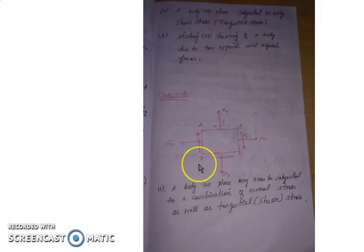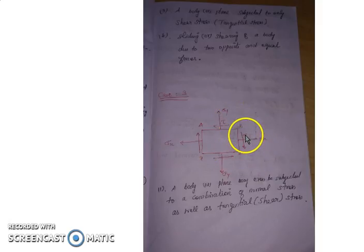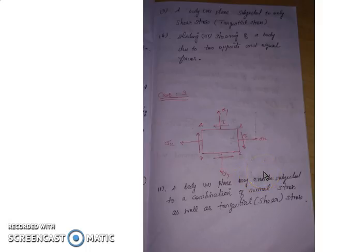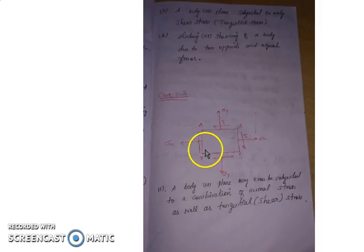Consider case three: the same plane element ABCD subjected to a combination of both x direction, y direction, and tangential forces — that is, both normal stresses and tangential stresses. When a material is subjected to a plane stress system with stress in x direction, stress in y direction, and shear in two opposite directions, the resulting normal and tangential stress on a plane varies with the angle theta.